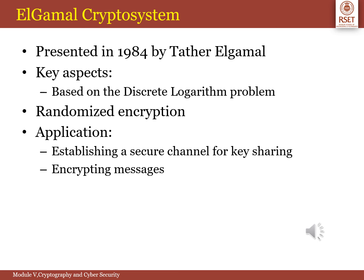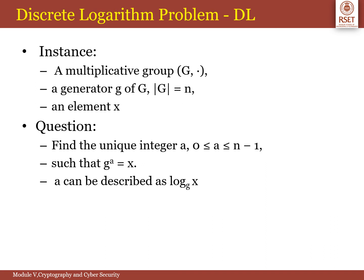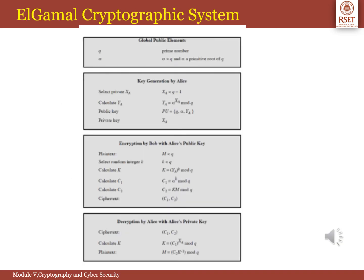The ElGamal cryptosystem is also a public key scheme based on discrete logarithms. It is used in some form in a number of standards, including the Digital Signature Standard. As with Diffie-Hellman, the global elements of ElGamal are a prime number Q and alpha, which is a primitive root of Q. User A generates a private-public key pair as follows: generate a random integer XA, compute YA which is equal to alpha raised to XA mod Q. A's private key is XA and A's public key is the combination of Q, alpha, and YA.